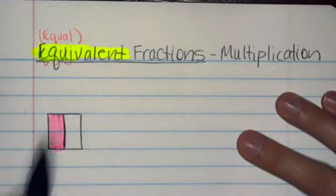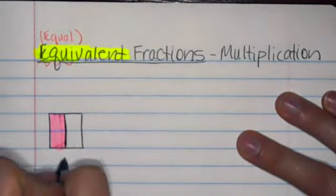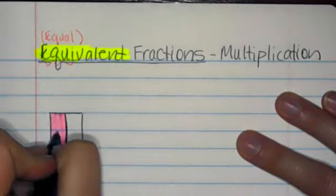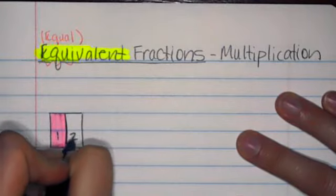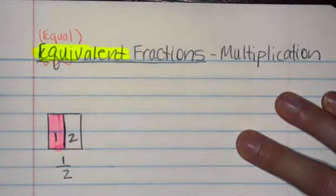In this example, you are going to see the image of one half or the representation of one half. We have two equal pieces, one, two equal pieces, and one of them is colored in. So that is one half.